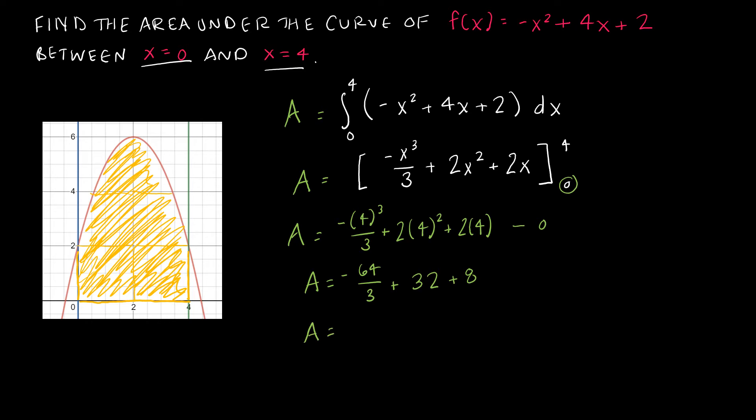I get -64/3 is -21 and 1/3. I'm adding to that 40, and so I can see that my area is going to be 18 and 2/3 square units.